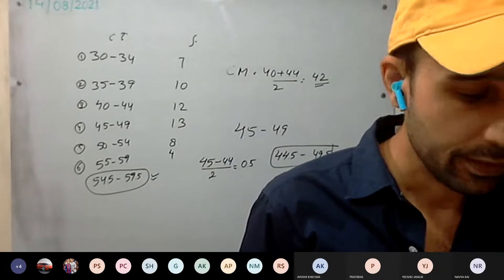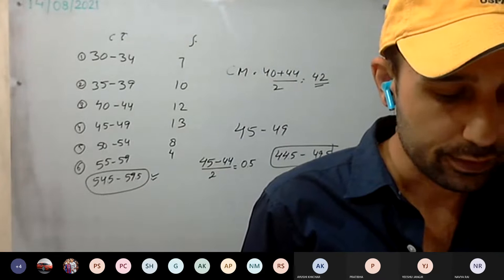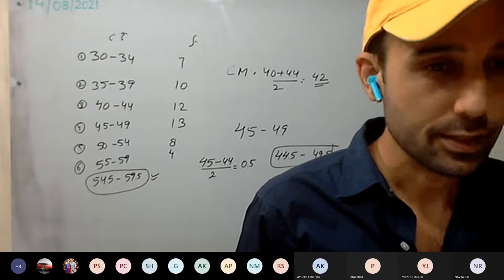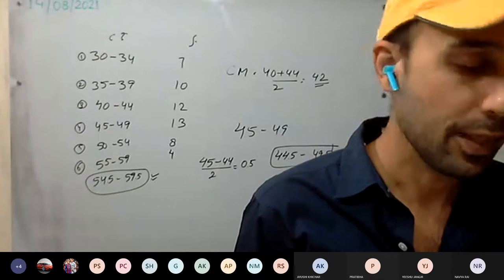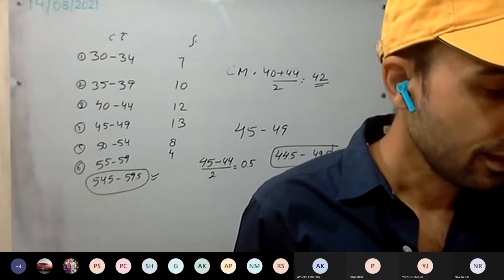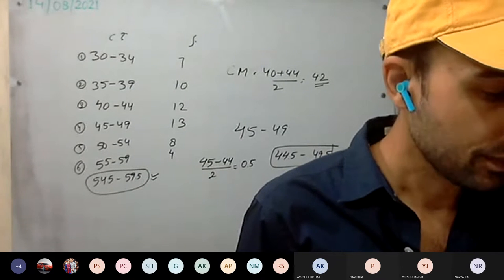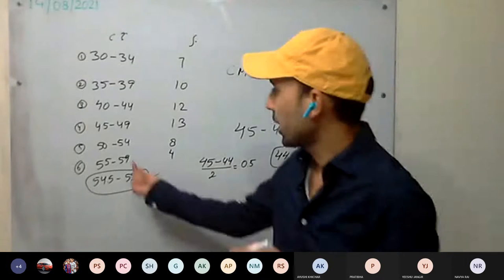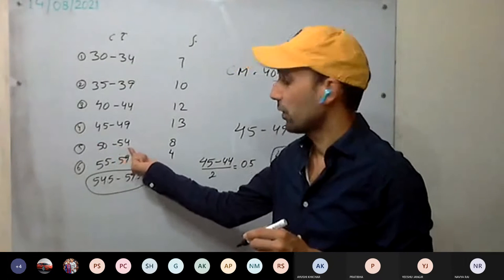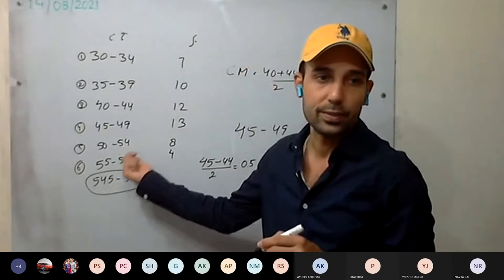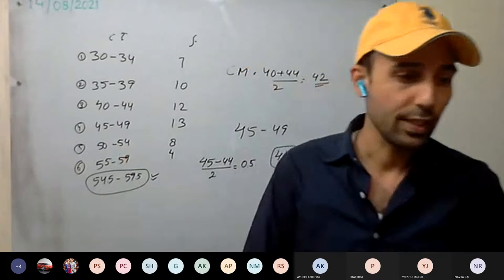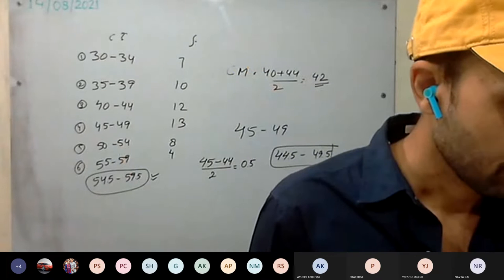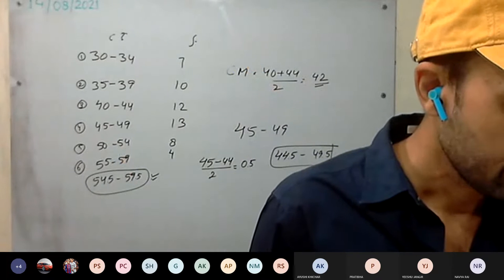The next question asks for the upper and lower limits of the fifth class. They are not asking for the actual limits — simply the upper and lower limits. So the upper and lower limits are 54 and 50.